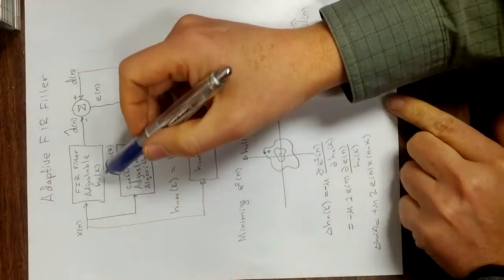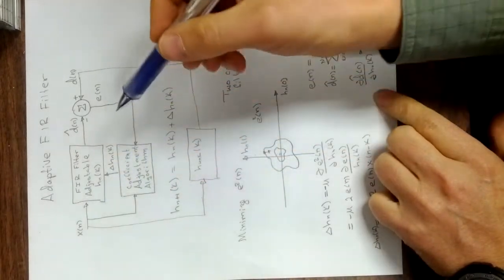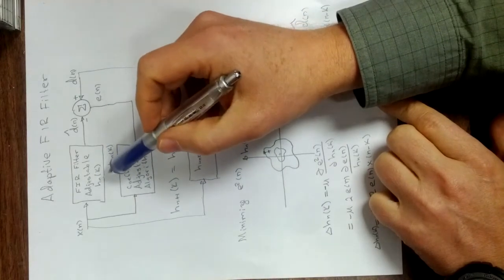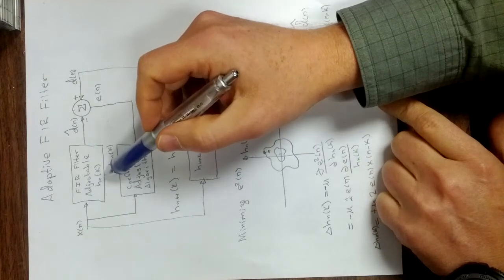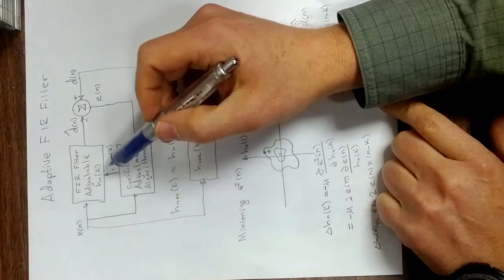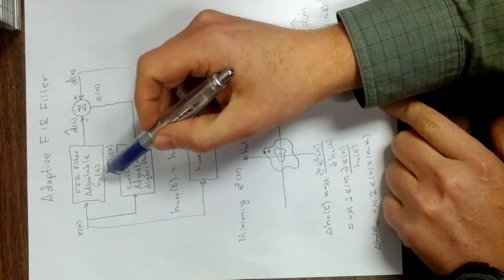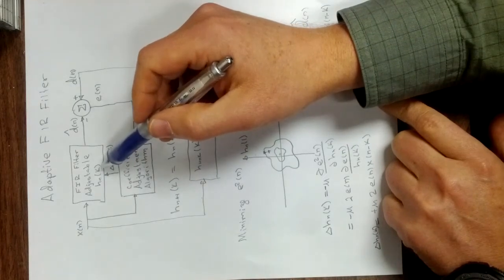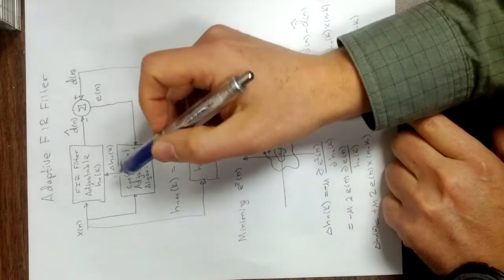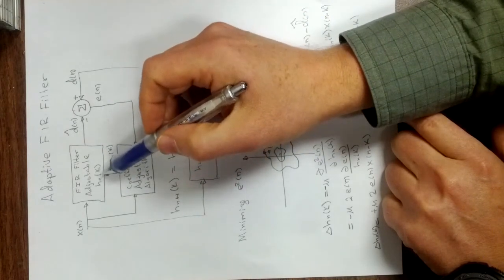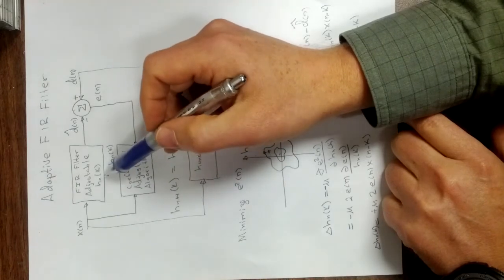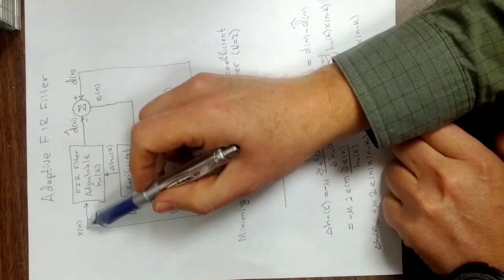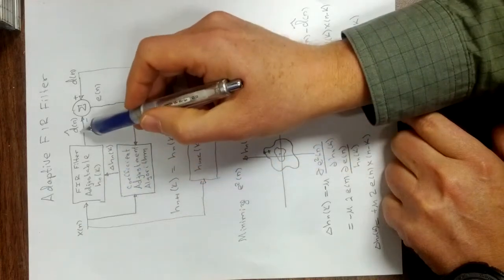Here we have an FIR filter with adjustable coefficients. There are in an FIR filter a number of coefficients, denoted by the letter K. You might have two coefficients or 256 coefficients or whatever. These coefficients in this FIR filter are adjustable, in other words you can change them. So we start out with this adjustable filter which has an input x of n and an output d hat of n.